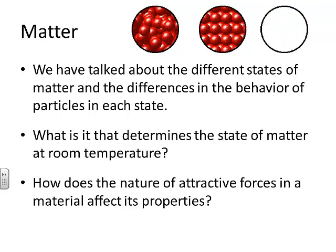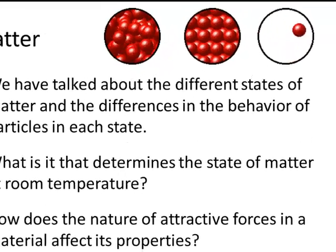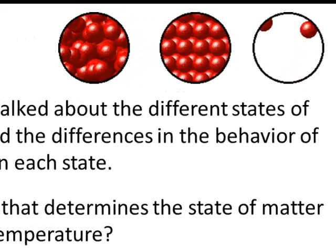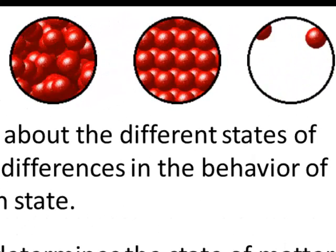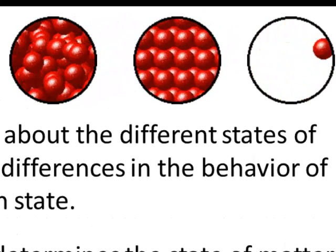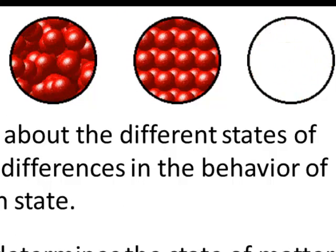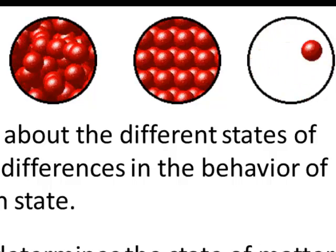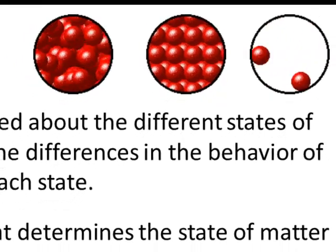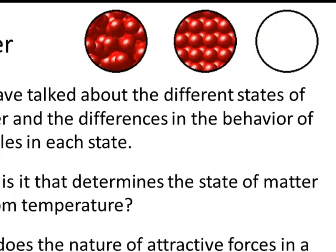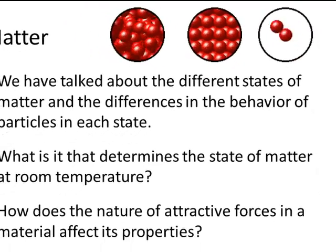At room temperature some things are solids, some are liquids, and others are gases as depicted up here. What is it that determines the state of matter at room temperature? Why are some things solid, liquid, or gas at room temperature? And how does the nature of attractive forces in the material affect its other properties?